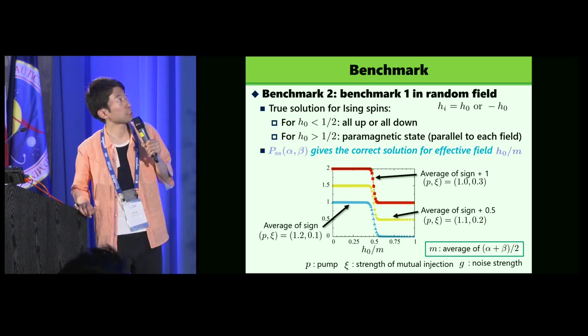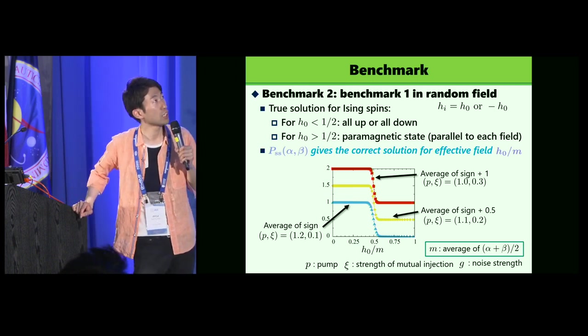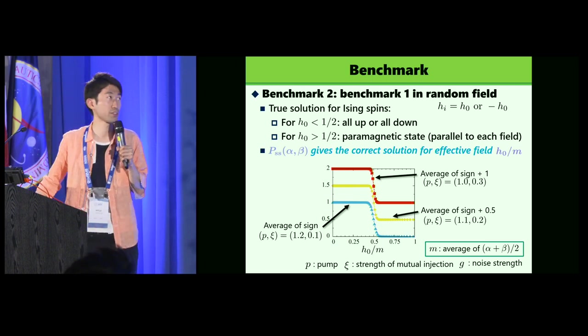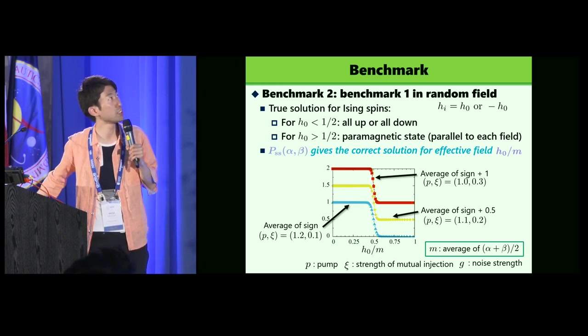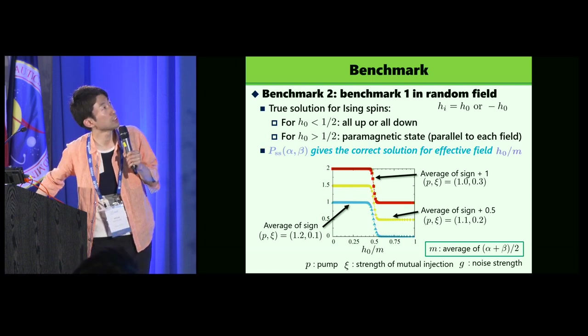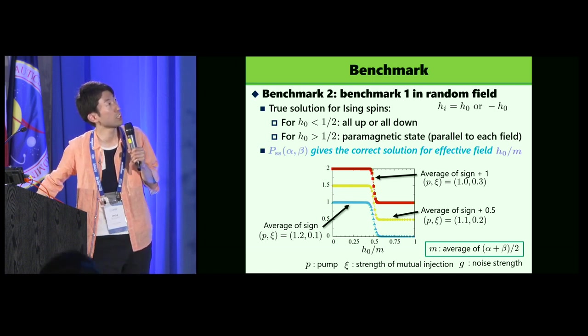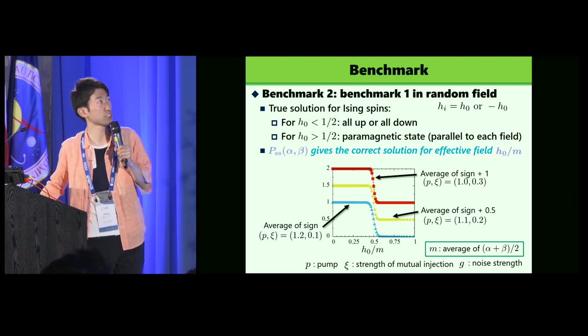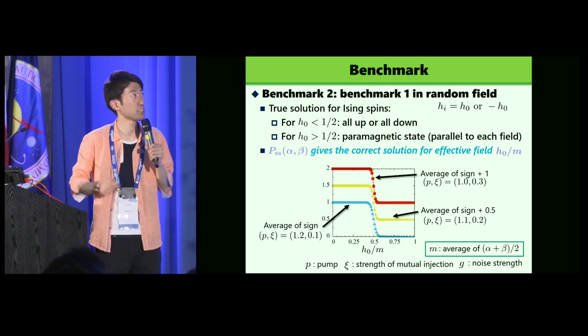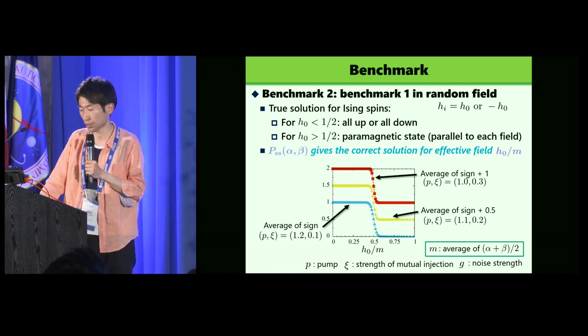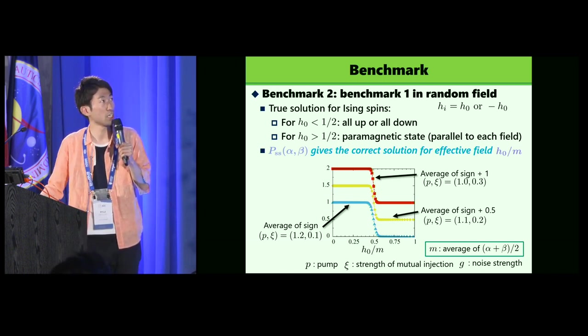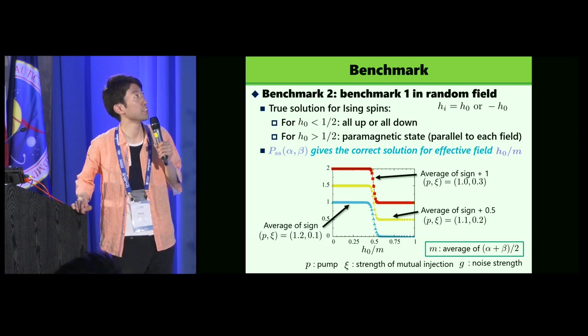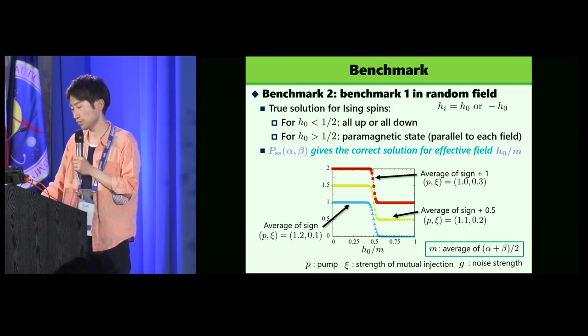But by using the normalized field, effective field, H_0 over M, M is an average of a quadrature amplitude, we find the correct phase transition point obtained from the steady-state distributions. The three curves show the result, magnetization for different set of P and C, and the value of vertical cities. So anyway, the three curves show that steady-state distribution gives a correct phase transition point. So we can obtain the correct solution by calculating the steady-state distributions.